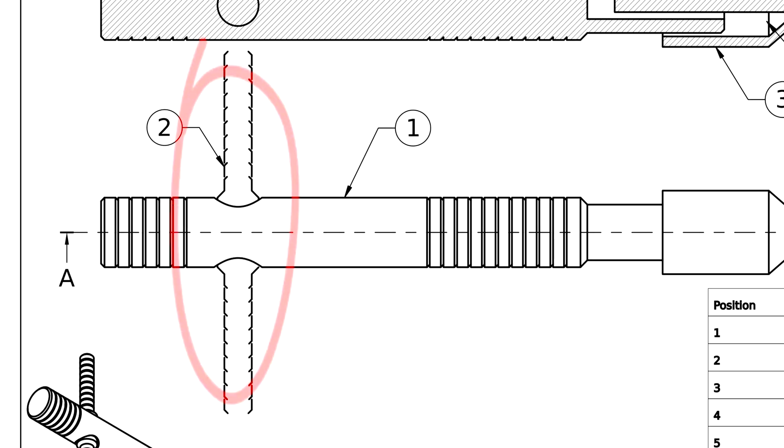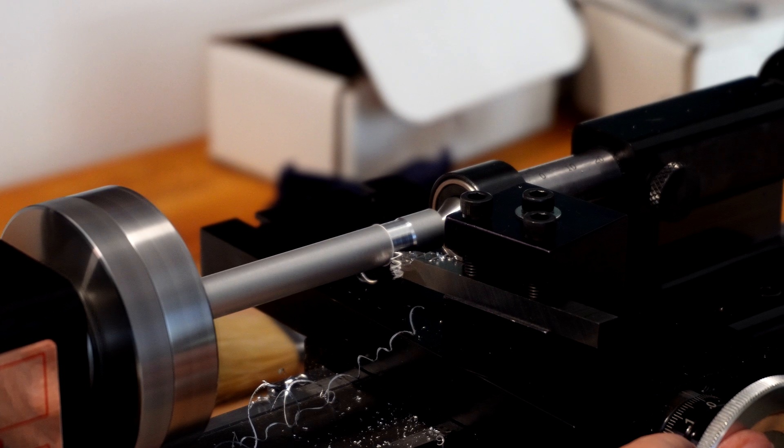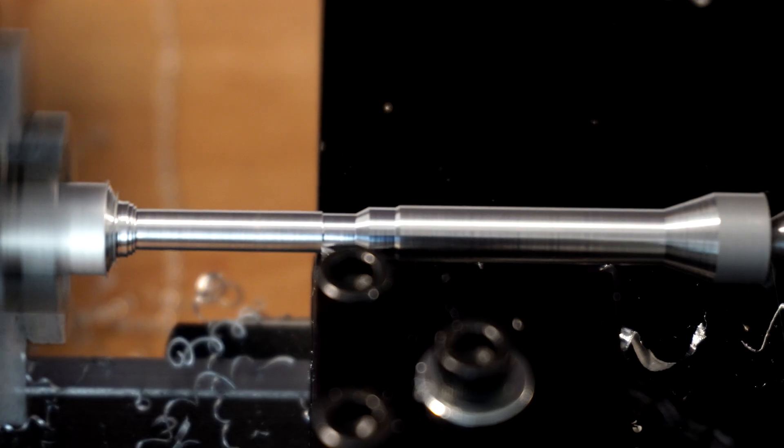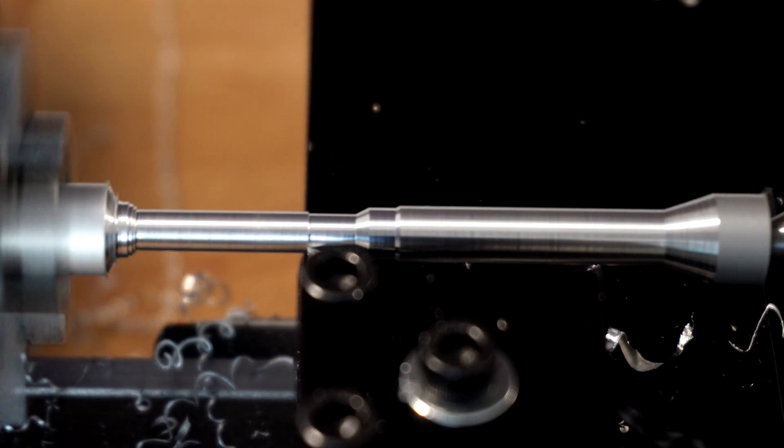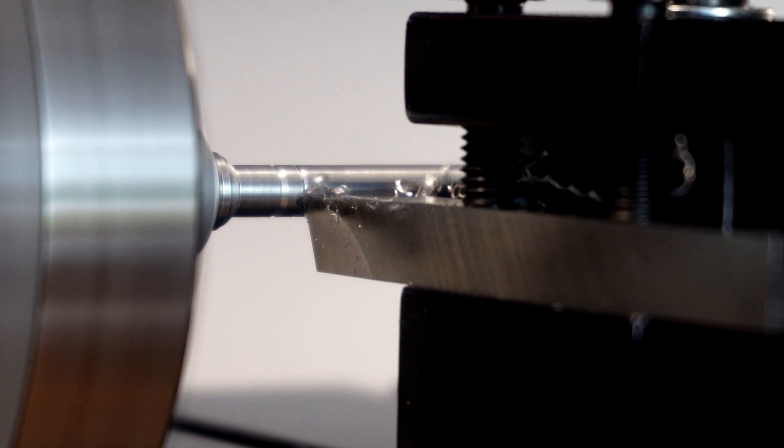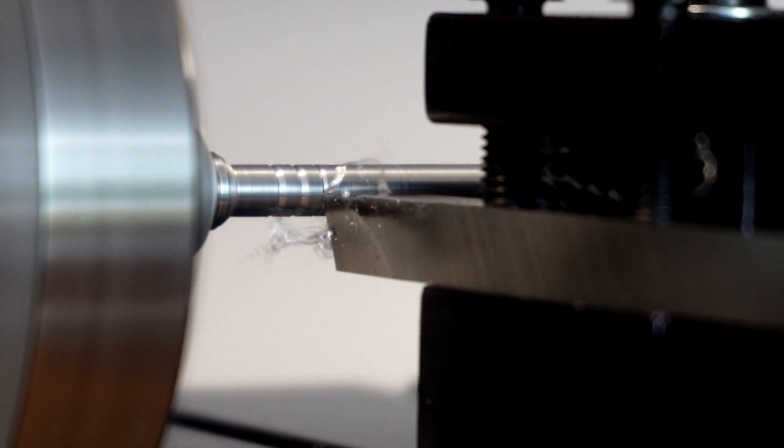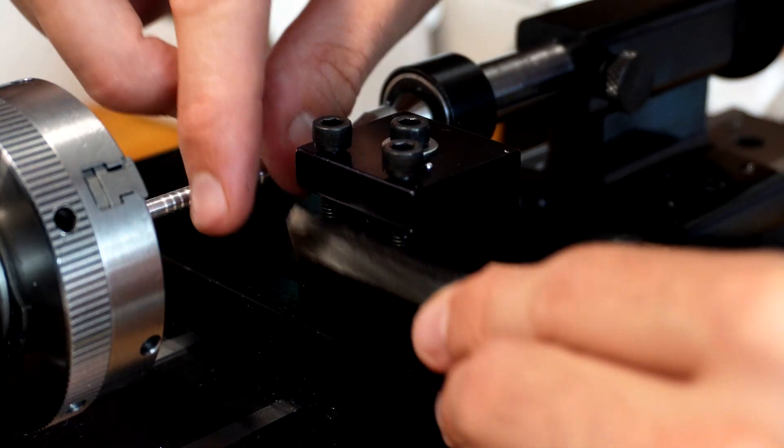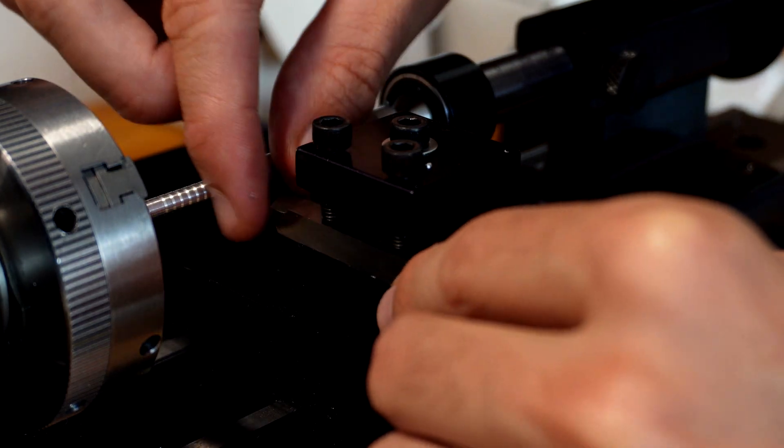Next we will make the lever. The process is very similar to what we just did for the main body, cutting and turning, but here we will use both right and left handed tools since it's a symmetrical part. I must say it's quite a joy to make such a small piece especially as a beginner in this field.